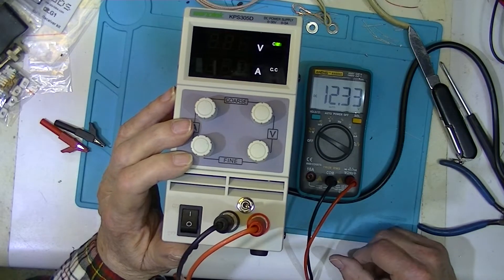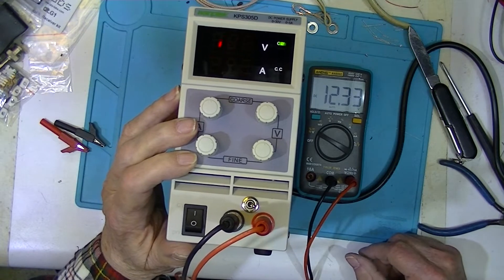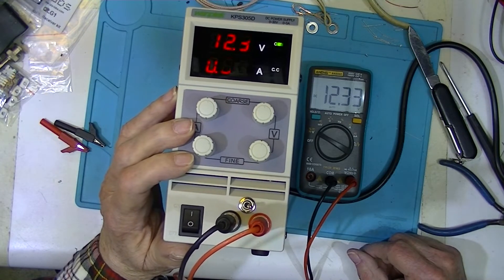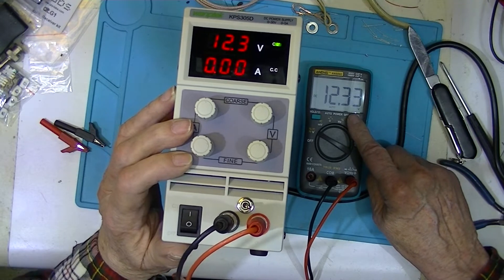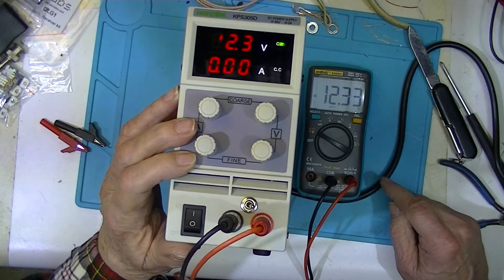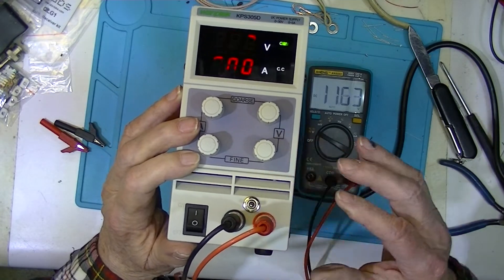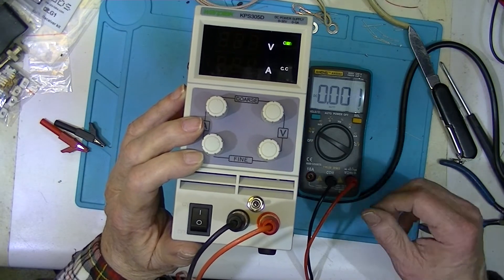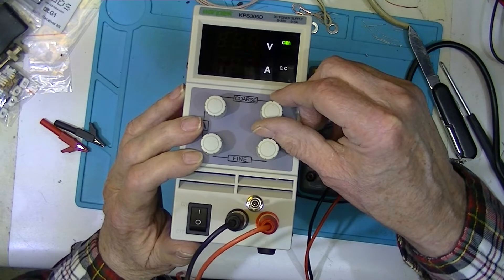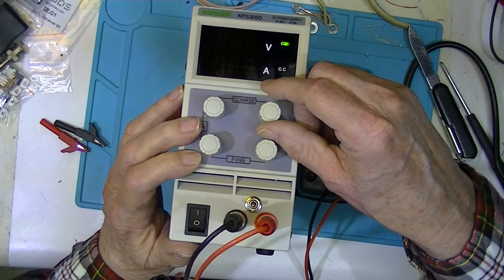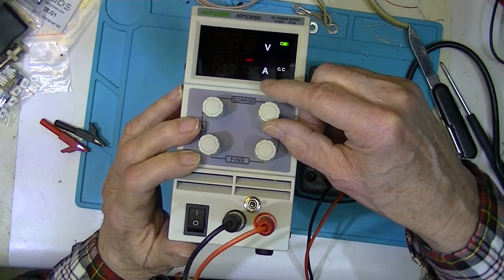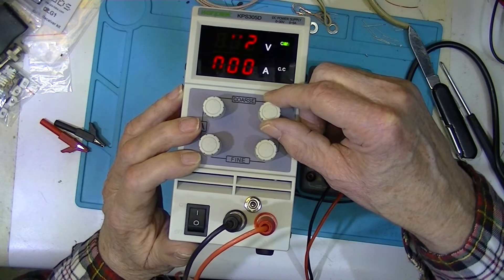Here's the power supply with the load switch turned on. And you can see it's, both meters say 12.3. Here's the load switch turned off. So I can adjust the voltage without having the load hooked up.